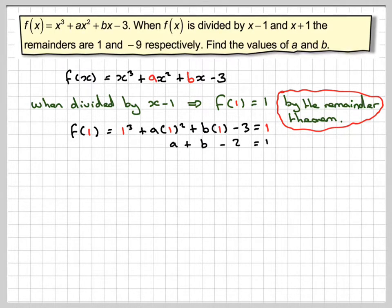So we can make an equation here now in a and b. It's going to give me a plus b, 1 minus 3 gives me minus 2 equals 1, so a plus b equals 3. We'll call that equation 1.